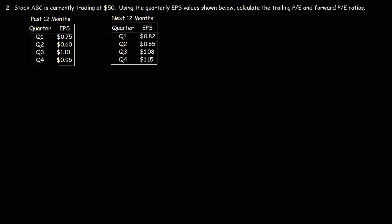Let's move on to the next problem. Stock ABC is currently trading at $50. Using the quarterly EPS values shown below, we need to calculate the trailing P/E and forward P/E ratios. First, we calculate the total EPS for the year by adding up the four quarterly EPS values: $0.75 plus $0.60 plus $1.10 plus $0.95, which gives us a total trailing EPS of $3.40.